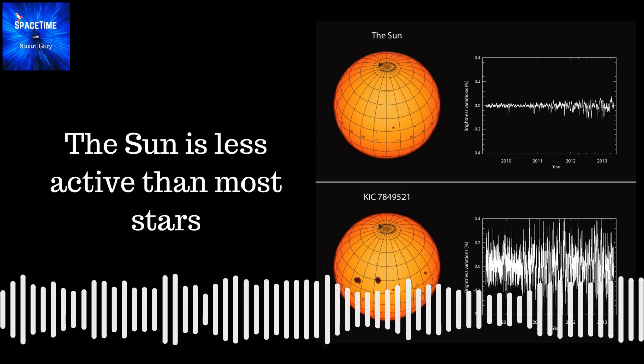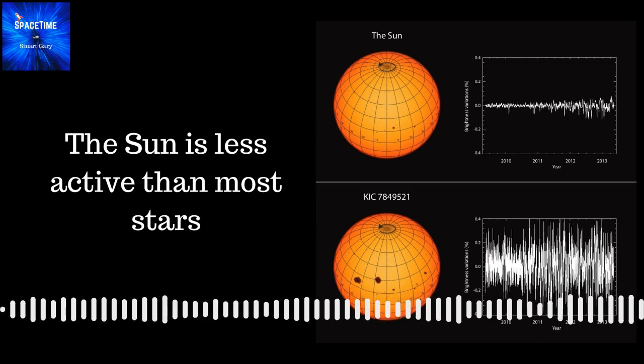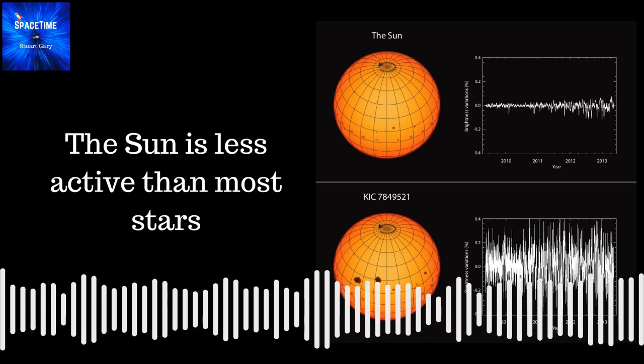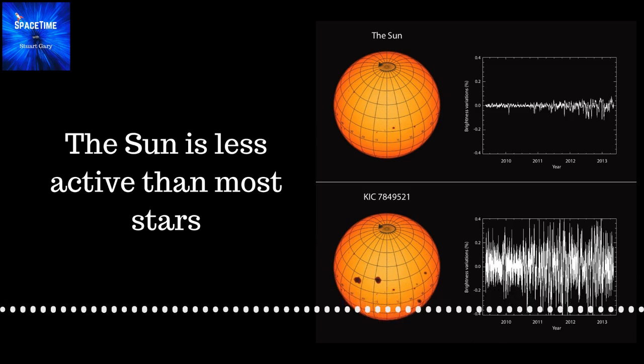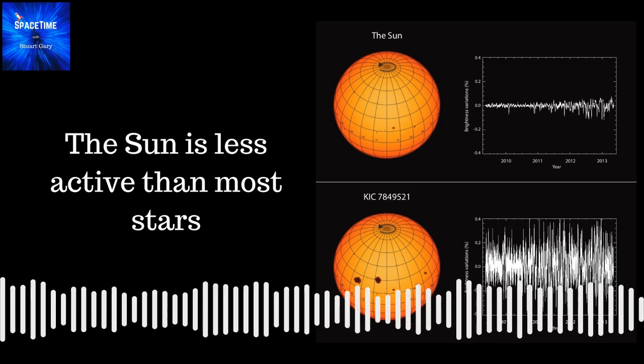It also determines how often the Sun emits solar flares and coronal mass ejections, which can send violent eruptions of plasma and radiation into space, and, if they're pointed in the right direction, towards the Earth.